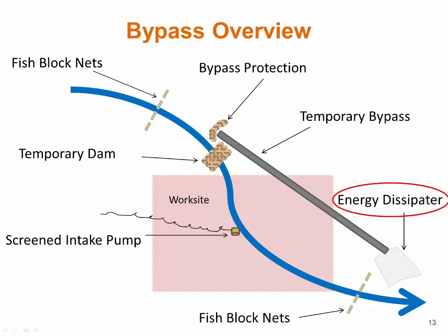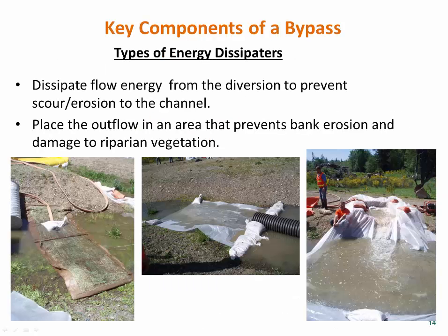Fish screens also need to be regularly cleared of debris to continually meet the velocity criteria. Water discharging from the temporary bypass needs energy dissipation to prevent damage to the creek bed or banks. Turbid water must not be allowed to re-enter the stream or any wetlands. The outfall and energy dissipator need to be located immediately downstream of the work area so that the downstream area is not dewatered, causing a stranding issue.